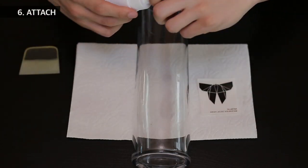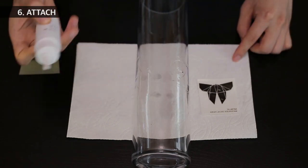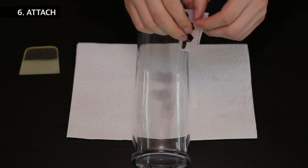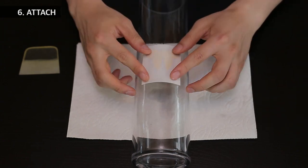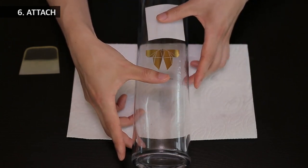Then apply glue W1. Attach the image on the surface and remove the backing paper.